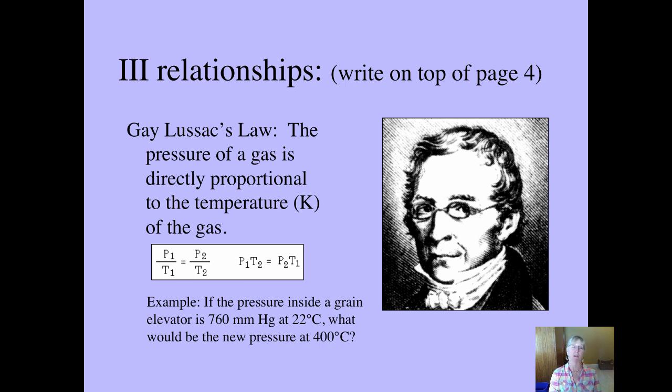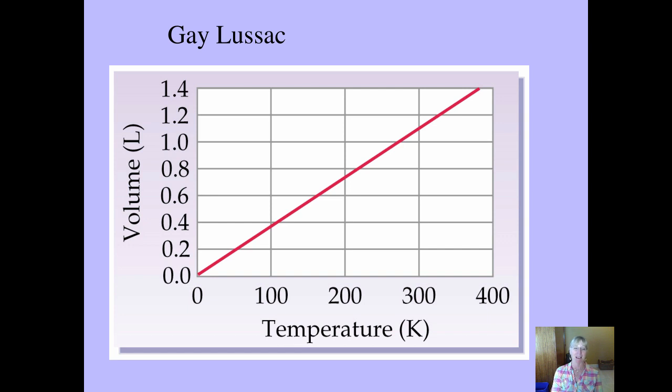Apparently I have a starting pressure of 760 millimeters of mercury. That MMHG is just telling you they used a manometer to measure it. Apparently the temperature to start with is 22. Now let's not let that grain elevator volume change. So the volume in this point in time is going to stay constant. What would the new pressure be if you cranked it up to 400 degrees Celsius? By the way, I would not want to be near that grain elevator.